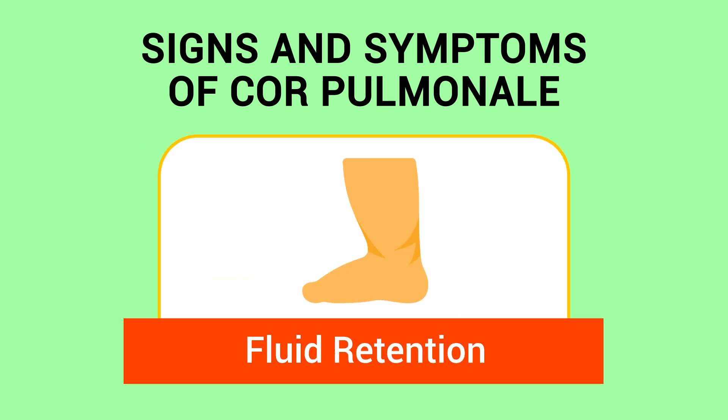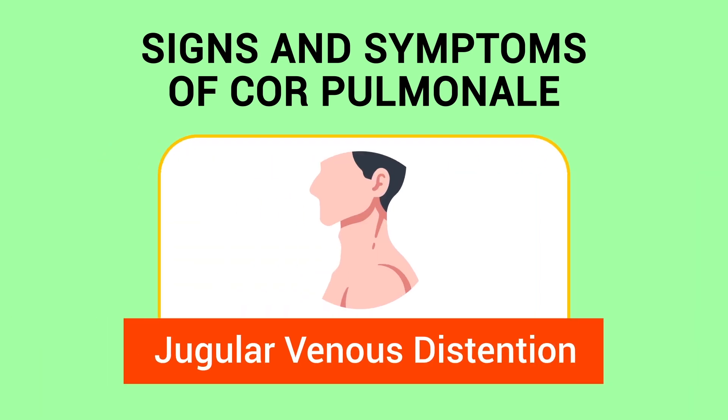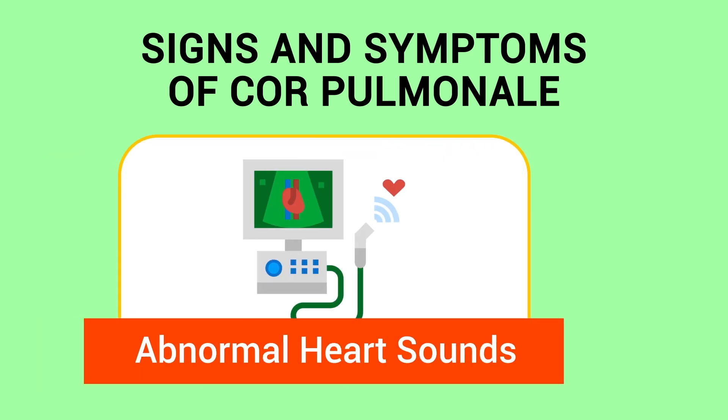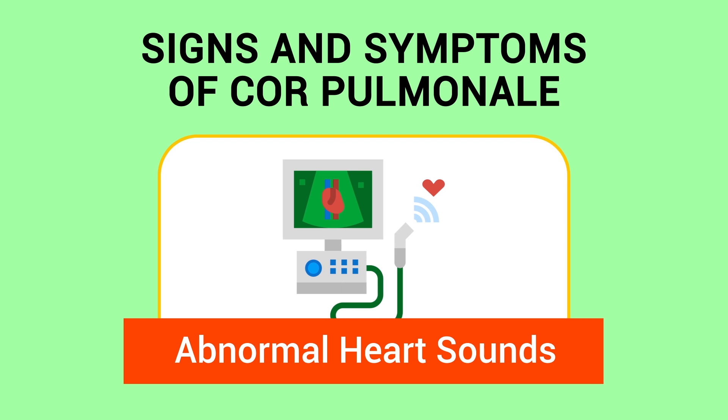The signs and symptoms of cor pulmonale include dyspnea, tachycardia, chest pain, fatigue, cyanosis, fluid retention, jugular venous distension, and abnormal heart sounds. These signs and symptoms help with the diagnosis of cor pulmonale.